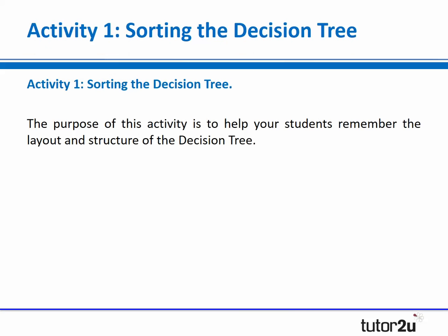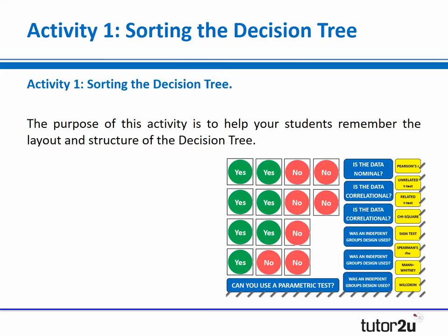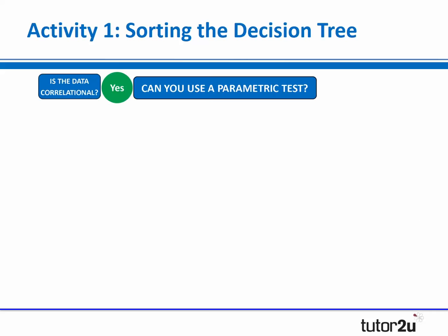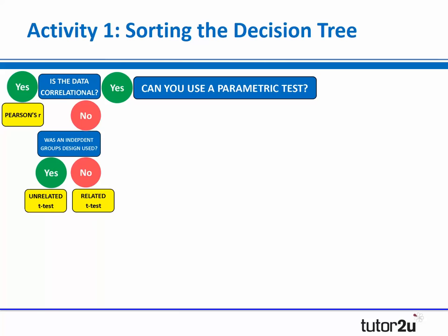I want to start by exploring four different activities. The first activity is called Sorting the Decision Tree — a really simple activity. The aim is just to help students remember the layout and structure of the decision tree. I've created a series of basic prompts and cards that students can cut out, and then organise correctly into the layout that determines the decision tree.